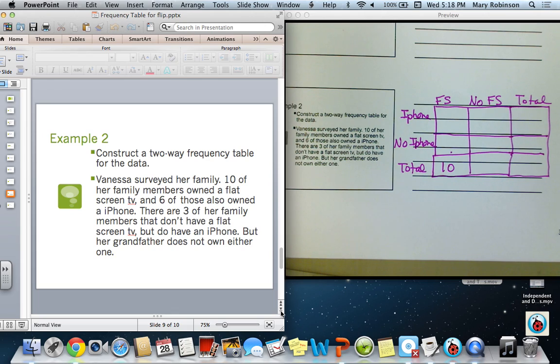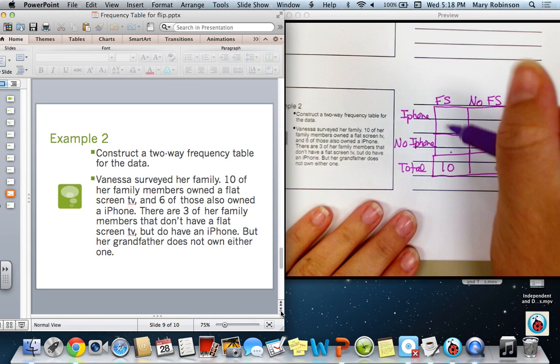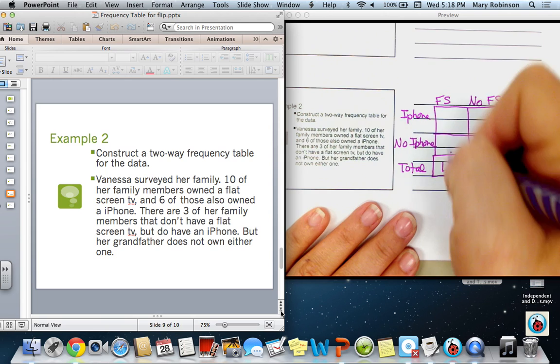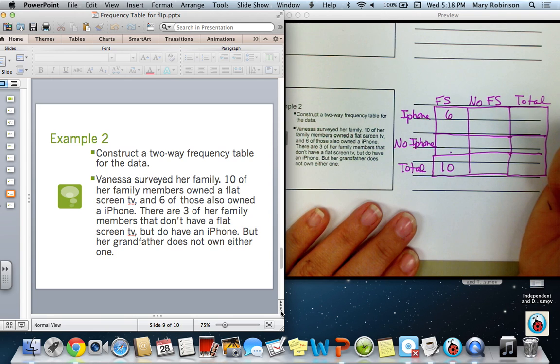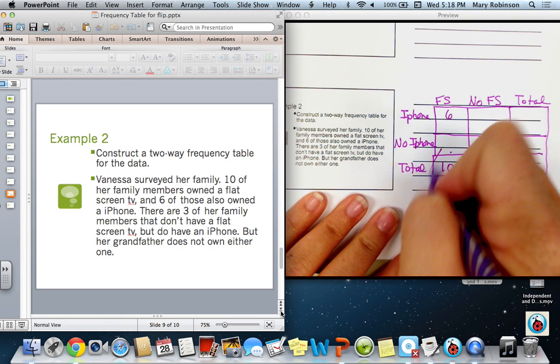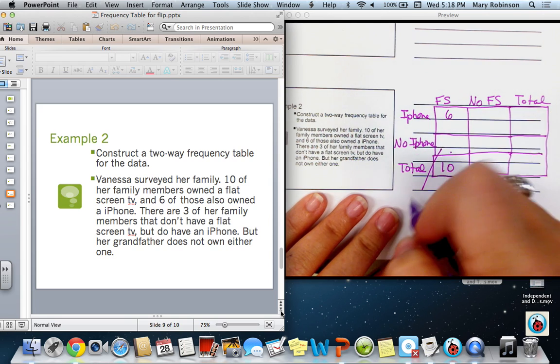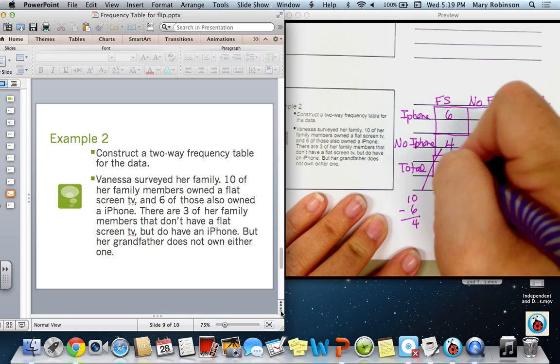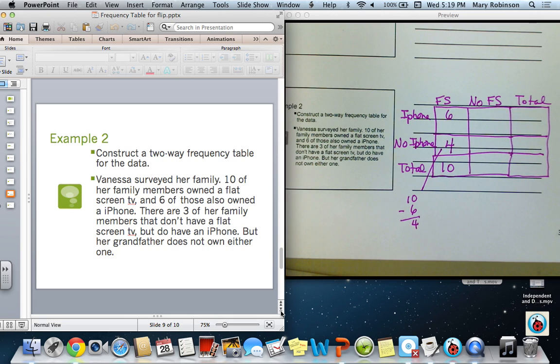We can deduce, by taking our total and subtracting six, that there were four of her family members that did not have an iPhone, but that did have a flat-screen.